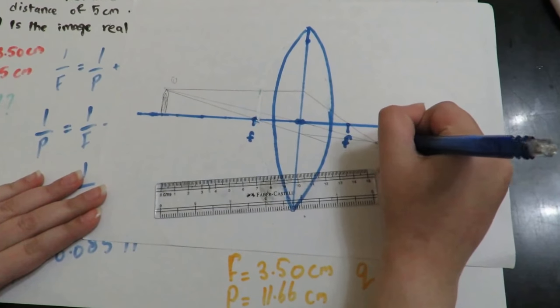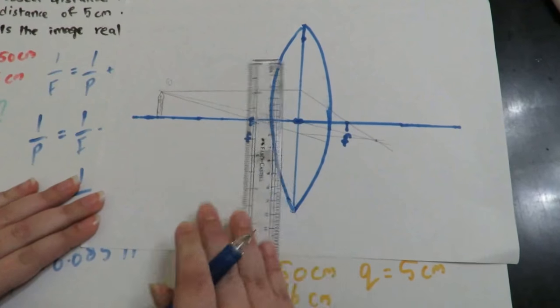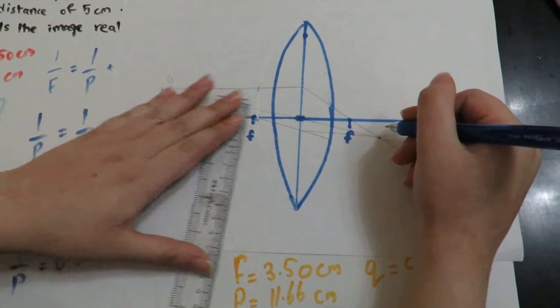The three rays meet at this point, that means that the image is here.